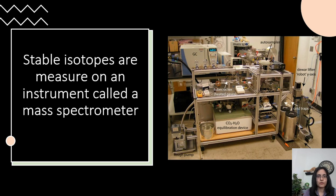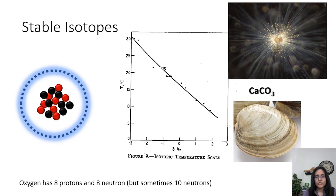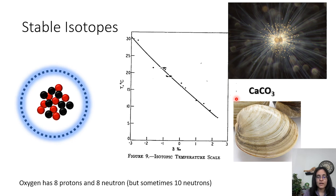I've had a chance to work with a mass spectrometer at a lab at Johns Hopkins University. We can also use more than one stable isotope — in calcium carbonate there's also carbon, which has six protons. Most carbon atoms have six neutrons, but some have seven. The abundance of heavier isotopes of both oxygen and carbon tends to clump together at low temperatures and less so at high temperatures — a technique called clumped isotopes.